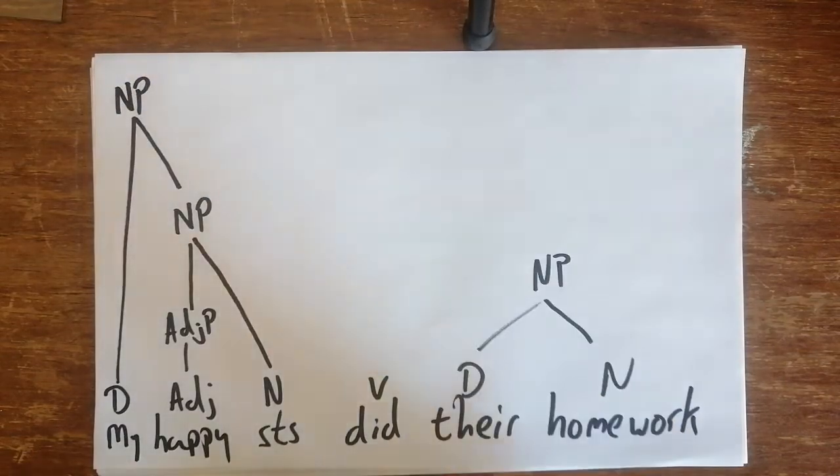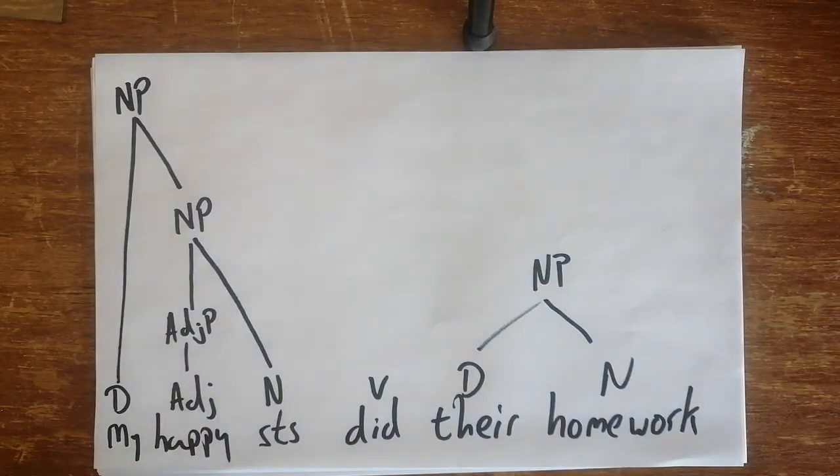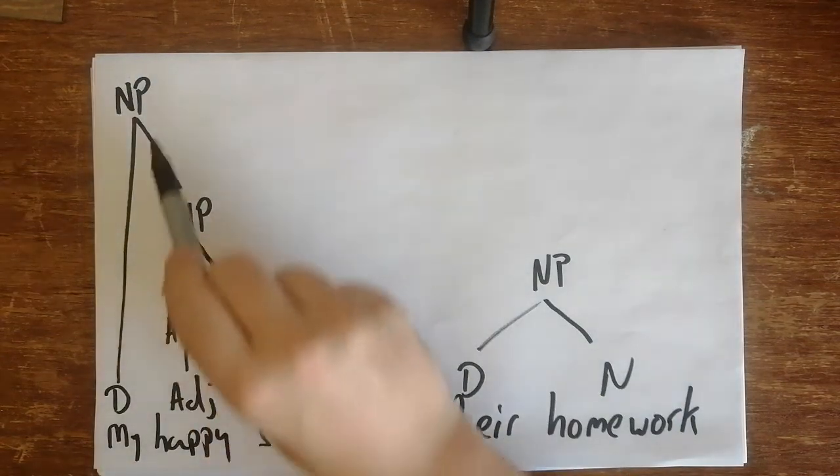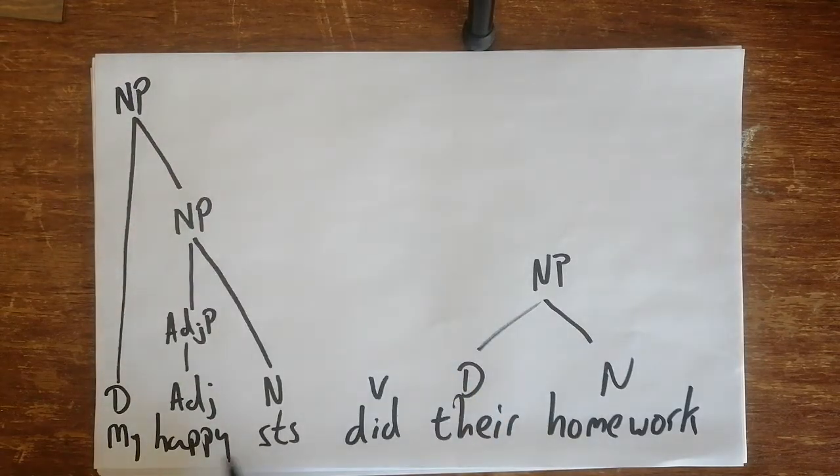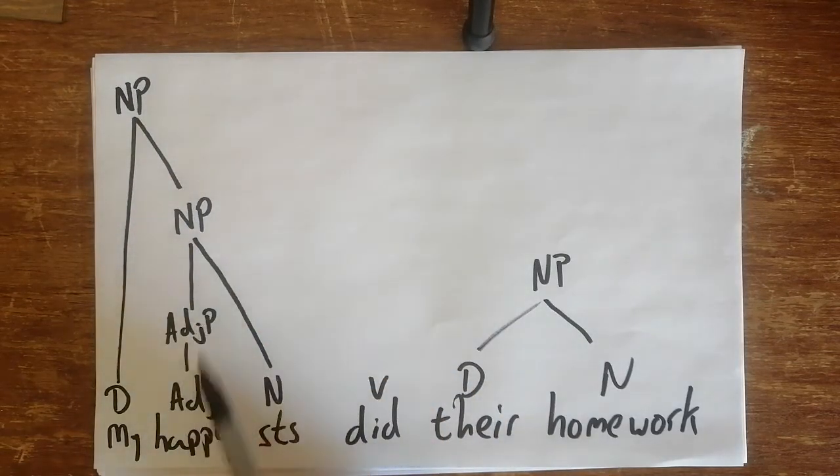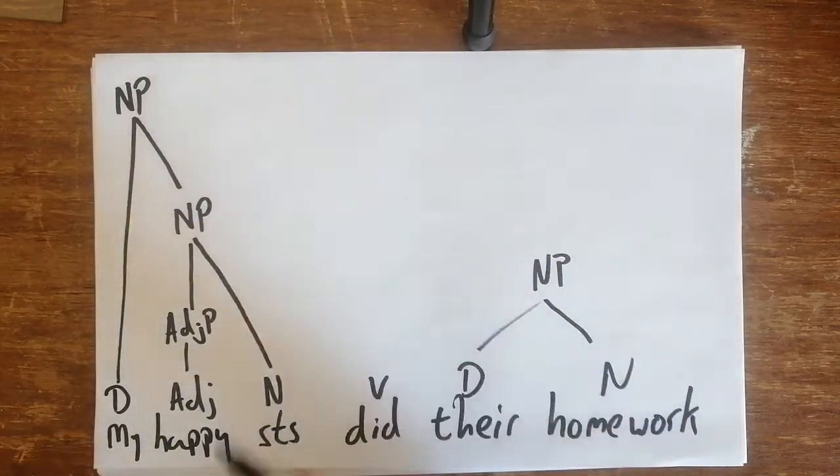So the information that this tree is giving me is that 'my happy students' is all a noun phrase, and 'happy students' is also a noun phrase, and 'happy' is just an adjective phrase. Now that's the subject of the sentence.